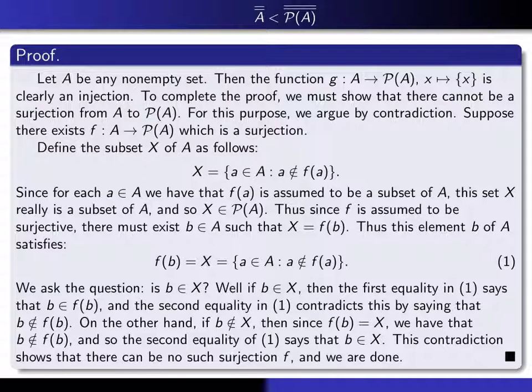Now in order to complete the proof, we have to show that it's impossible for there to be a surjection from A to P of A. So we're going to argue by contradiction. Suppose that there does exist a surjection from A into P of A. Call it f. And what we're going to do is we're going to write down a certain subset of A, for which it's impossible that that subset equals f of b for any b in A. And that would contradict the surjectivity of f.